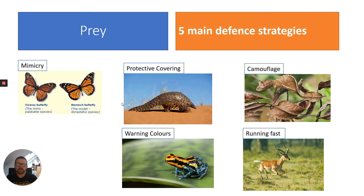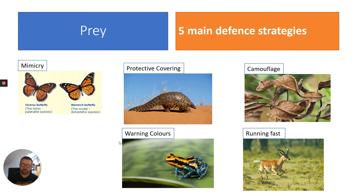In this case, this is a pangolin. Another good example in the UK is a hedgehog. Next is camouflage — this reptile is extremely camouflaged and will therefore evade capture by the predator. Then warning colours: either the species is poisonous or it isn't. In this case, this is a poison dart frog, which is definitely poisonous. It has warning colouration to signal to generalised predators that it's not a good idea to eat this particular frog.